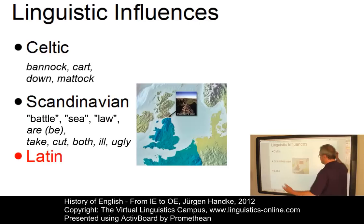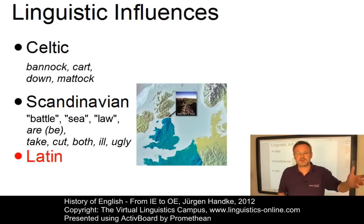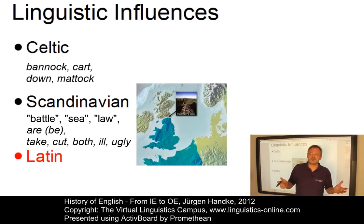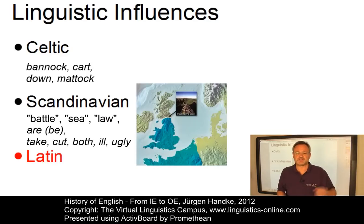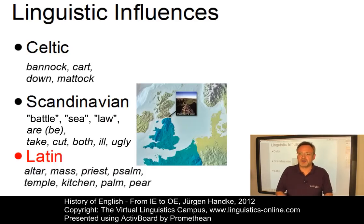The first Roman expedition to Britain was undertaken by Julius Caesar in 55 or 54 before Christ, but the Romans didn't start to conquer Britain until 45 after Christ. The Roman influence was not very large. Most Latin words were brought to Britain by the Germanic invaders who had previously come into contact with Roman culture and Christianity. Typical examples are 'altar,' 'mass,' 'priest,' 'psalm,' 'temple,' 'kitchen,' 'palm,' and 'pair.'